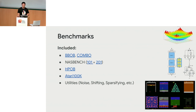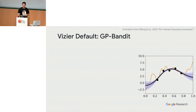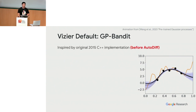The Vizier default that we recommend benchmarking against when citing Vizier is the GP Bandit. If you import our search and run it, this is the default algorithm you'll be using.